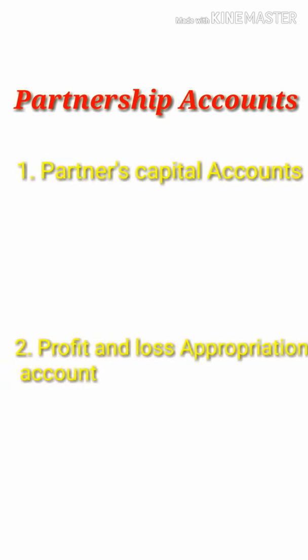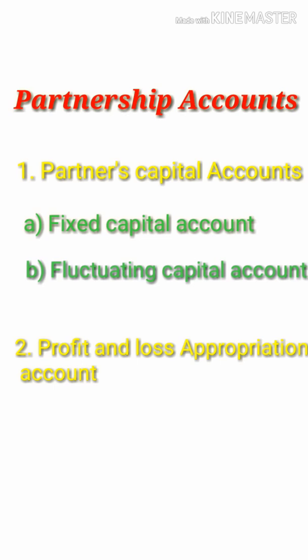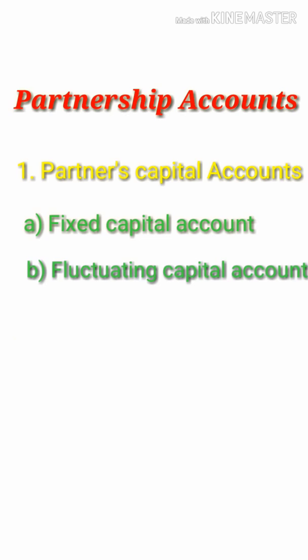After the partnership, we have two accounts. Here we will prepare these two accounts. The first one is the Fixed Capital Method and the second is the Fluctuating Capital Method.